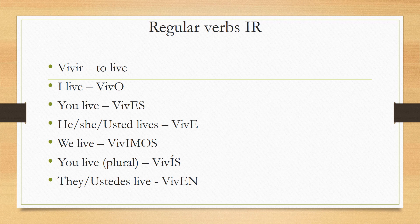For 'we,' the ending is IMOS — we say IMOS in Spanish for IR verbs — so 'we live' is 'vivimos.' For 'you plural,' the ending is ÍS — so 'you all live' is 'vivís.' And for 'they' or 'ustedes,' the ending is EN — so 'they live' is 'viven.'